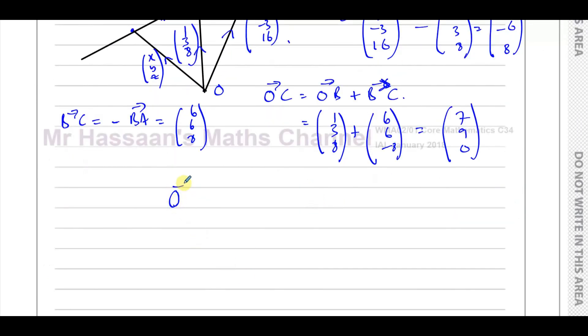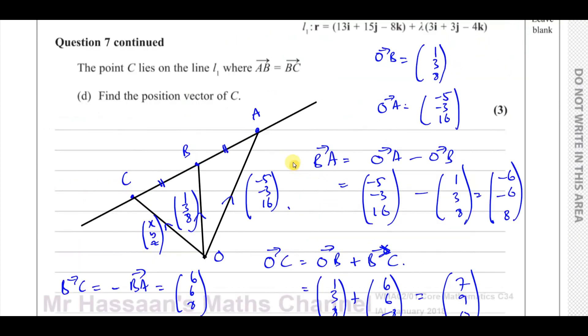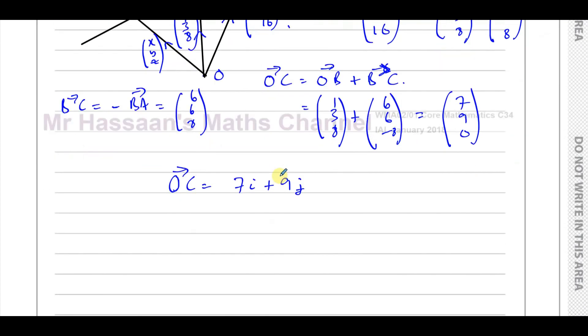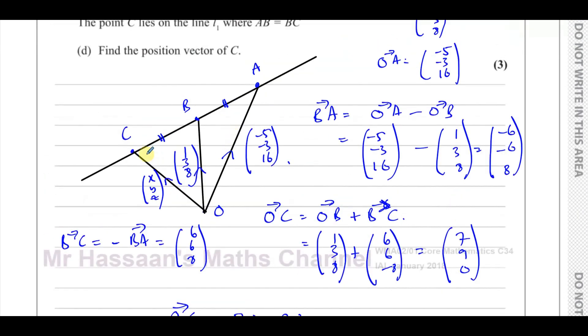So you can say O to C is equal to 7i plus 9j. We don't have to write 0. And that's the answer to part D of this question.